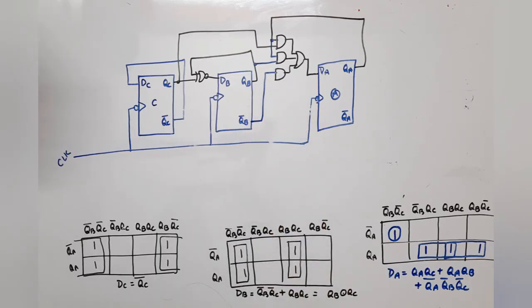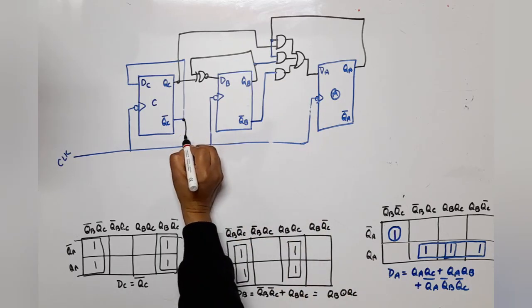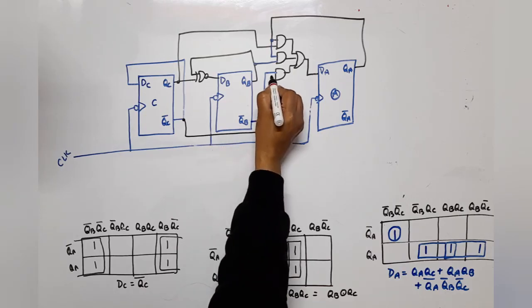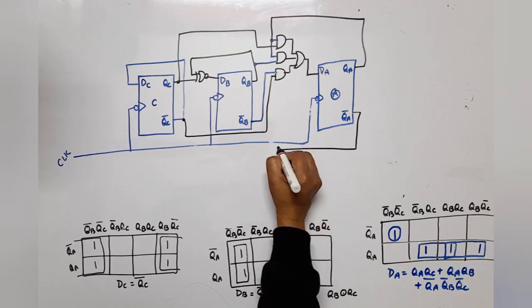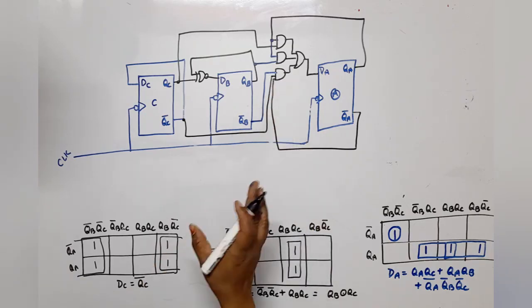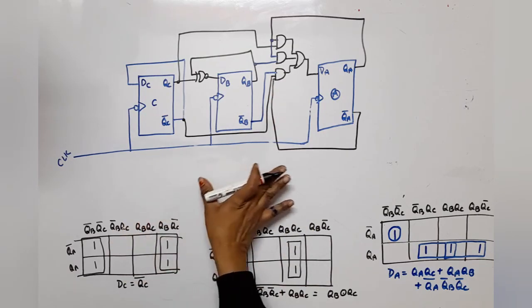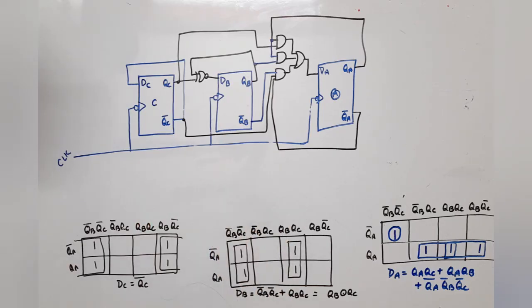Now QC bar is needed. And QA bar is needed. You can directly take it or you can use feedback to connect it. Diagram done.